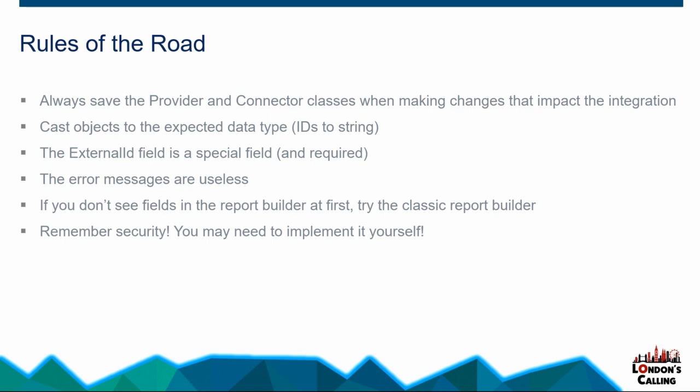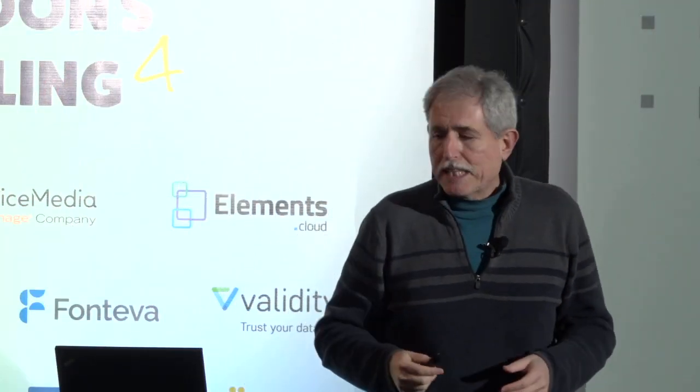You will have to go and capture debug logs and sort of guess and experiment. Whatever is confusing the external object mechanism and the Salesforce Connect mechanism and the report builder mechanism — the error messages that result are completely irrelevant, useless. If you add a field or you add an external object and you do not see the fields in the report builder, try the classic report builder. It should work in the classic report builder and then it will work in the lightning report builder. It just seems to be that way right now.